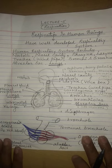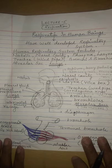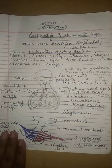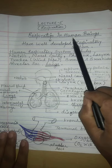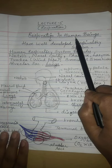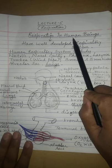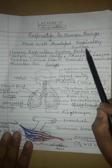Good morning students. In the last video we had discussed about respiration in animals, covering different respiratory organs in different animals. Now in this video we will be discussing about respiration in human beings. Human beings are complex animals and have a well-developed respiratory system.